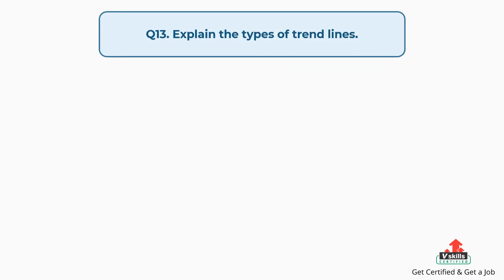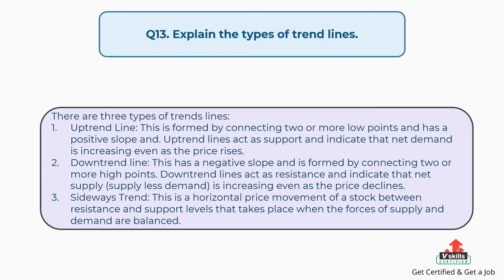Question number 13: Explain the types of trend lines. There are three types of trend lines. First, uptrend line: this is formed by connecting two or more low points, has a positive slope, and uptrend lines act as support and indicate that net demand is increasing even as the price rises. Second, downtrend line: this has a negative slope and is formed by connecting two or more high points. Downtrend lines act as resistance and indicate that net supply — supply less demand — is increasing even as the price declines. Third, sideways trend: this is a horizontal price movement of a stock between resistance and support levels that takes place when the forces of supply and demand are balanced.